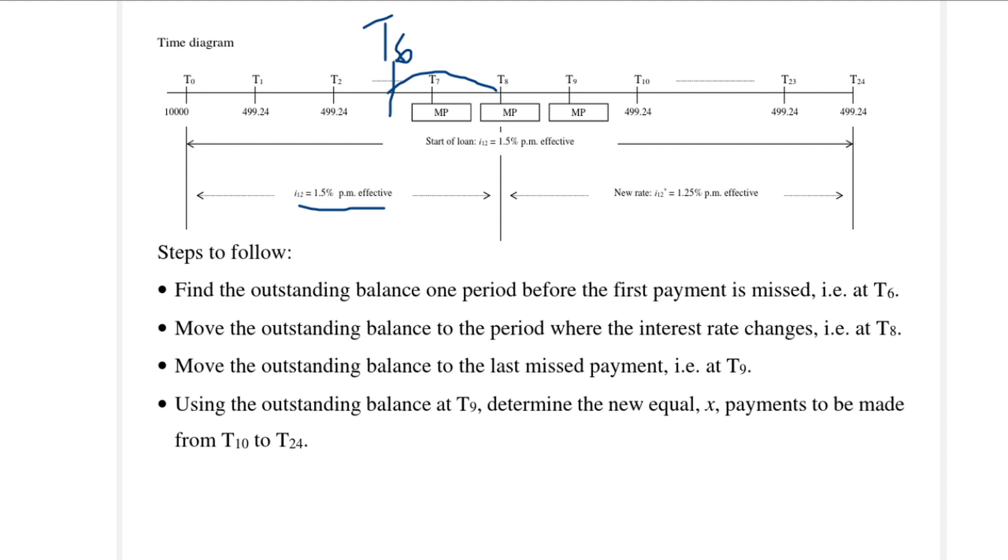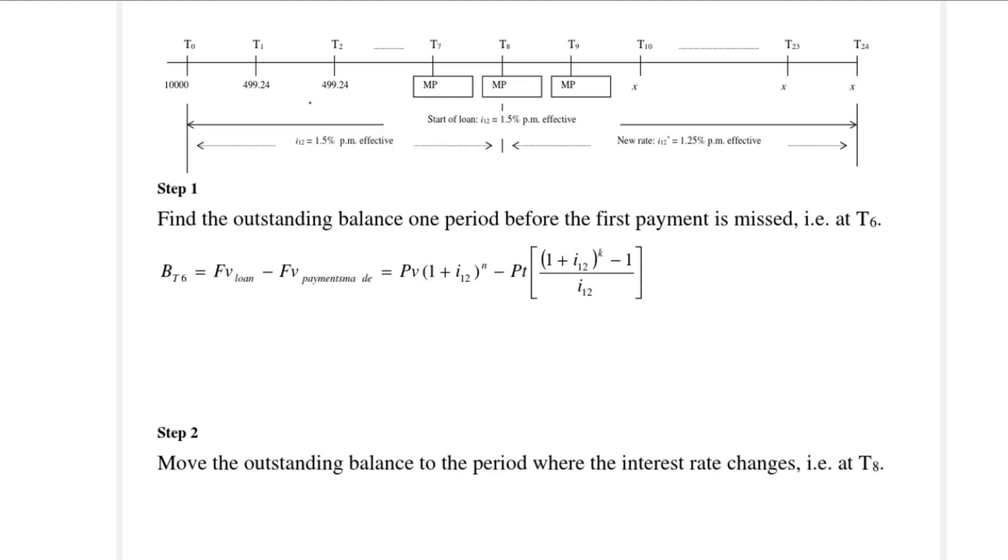Then in the second step, we will move that outstanding balance from T6 to T8 using the original interest rate. Then in step three, we will move that outstanding balance from T8 to T9 using the changed interest rate. And then in the last step, in step four, we will use the outstanding balance at T9 as the present value of a new loan and use that to calculate the payments. So we can do that. And for the first step then, we would like to get the outstanding balance at T6. So again, we make use of the retrospective method.